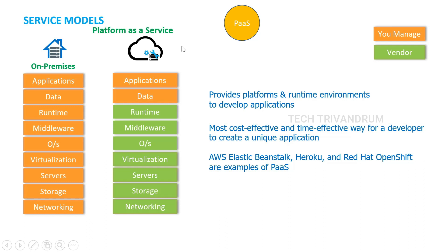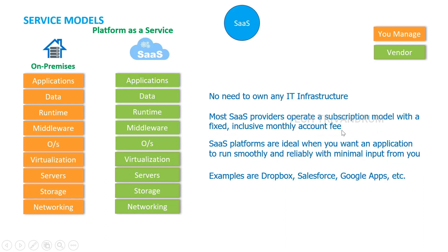Next is Platform as a Service (PaaS). In a PaaS setup, the vendor takes care of everything from networking up to runtime. Only data and applications we have to manage. PaaS provides the platforms and runtime environments to develop applications, and this is the most cost-effective and time-effective way for a developer to create a unique application. The developer need not worry about networking to runtime — the vendor provides all of that and the developer only needs to concentrate on creating the application. Examples of PaaS are AWS Elastic Beanstalk, Heroku, and Red Hat's OpenShift.